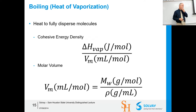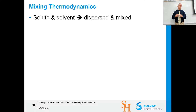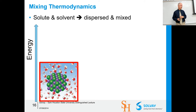The molar volume comes from dividing the molar mass by the density of the liquid. If you know the molar mass and measure the density, you get the molar volume — volume per mole. For mixing, we take that solute and solvent and think about dispersing them completely. This is illustrated by a salt crystal — sodium chloride — dissolving in water.